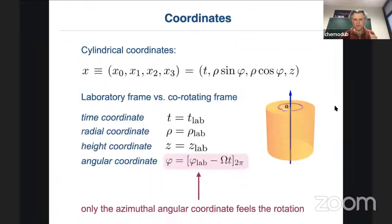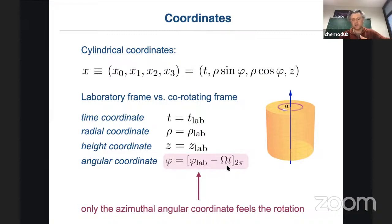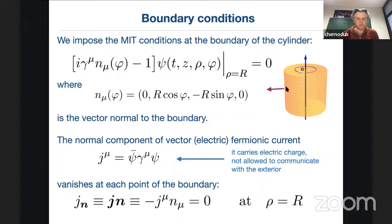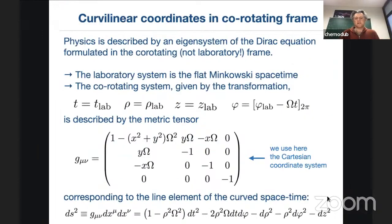Rotation is described simply: we introduce cylindrical coordinates — time, radial, height, and angular — and rotation is just saying that the local angular coordinate is related to the laboratory coordinate with a constant shift, periodic in 2π. We apply MIT boundary conditions, which say that no physical current crosses the boundary of the cylinder — the current vanishes at the boundary. All physics in the rotating system is defined in the co-rotating frame. Temperature and chemical potential are measured in the co-rotating frame, not the laboratory frame.